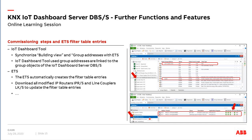The easiest way to download all IP routers or line couplers is to go to ETS and click the dynamic folder on top. When you click on it, you see the modified devices view by default. Clicking on modified devices shows on the right side a list of all devices that must be downloaded — for example, the IP router where the group address flag is now missing. You can start the upload directly from this modified devices view.